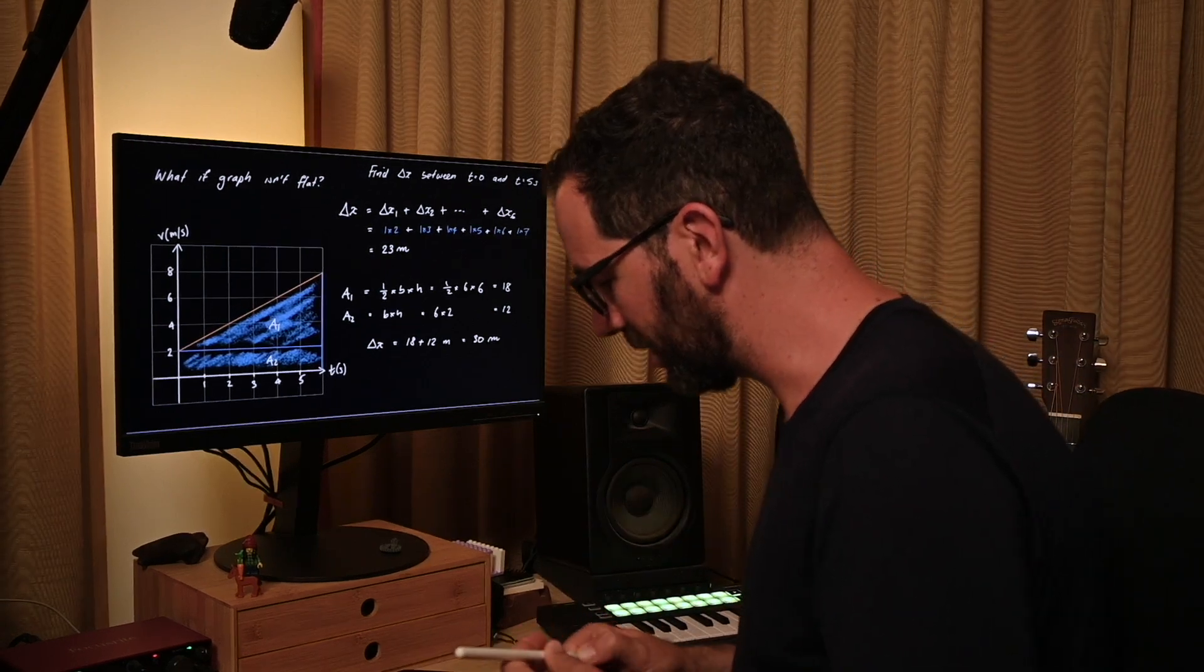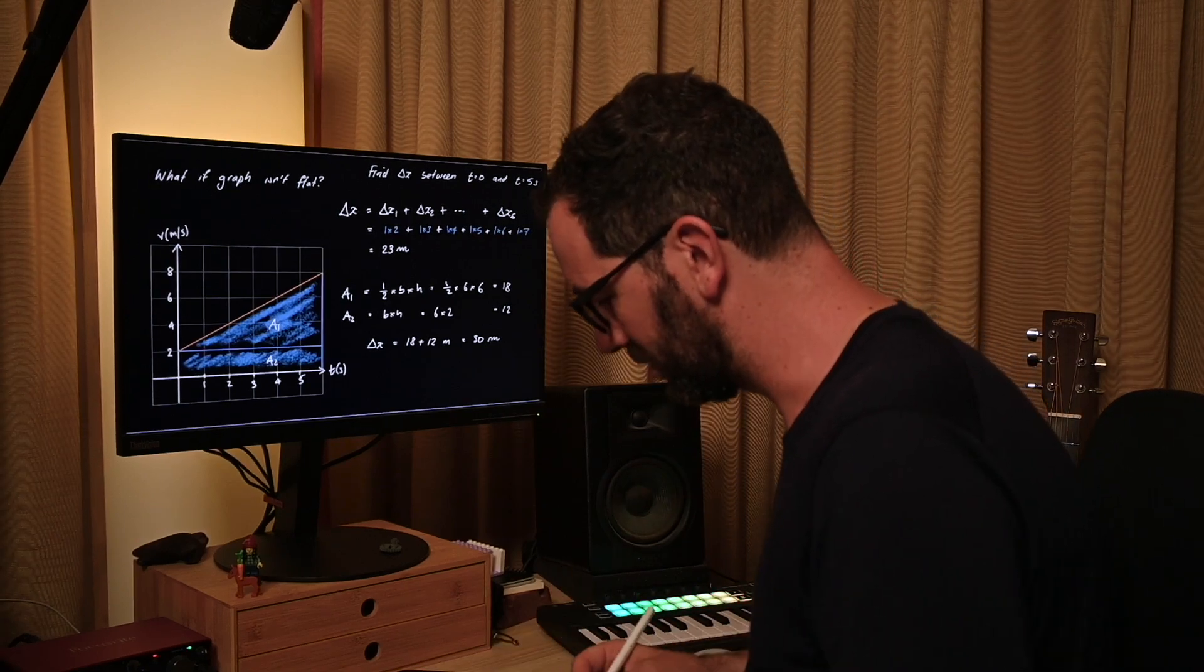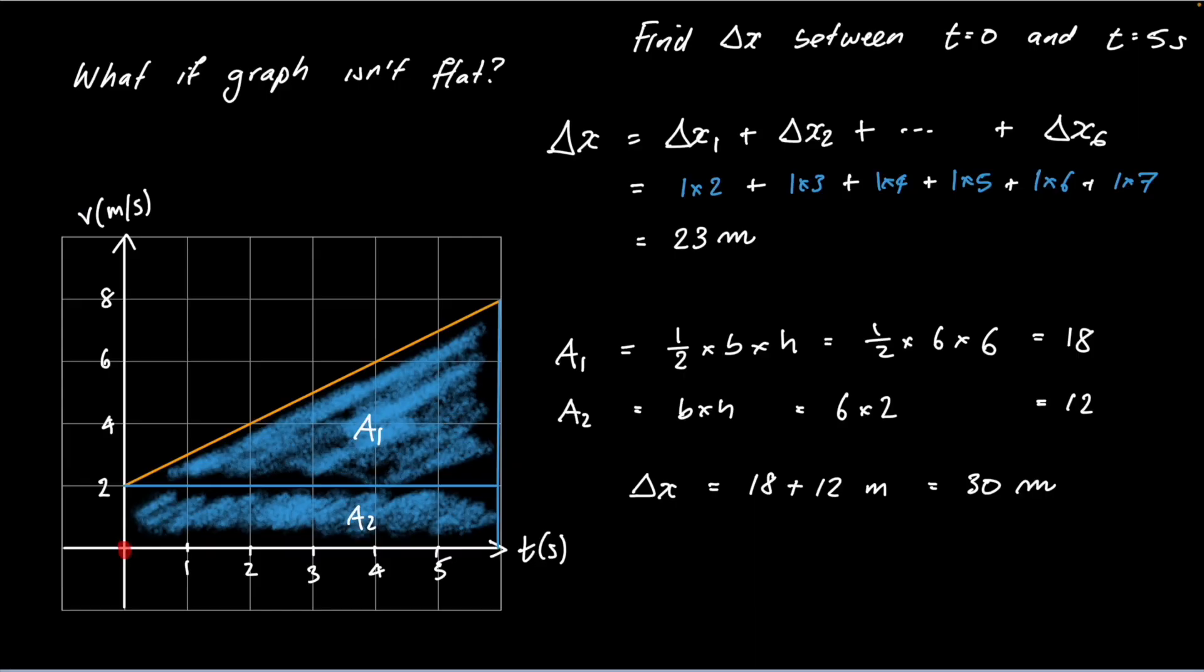We can pretty much always find displacements from velocity-time graphs just by working out the area between the two points in question. For this one it was between zero and five. I went all the way to six, so let's just change the question to make it fit our purposes. 23 in the first case and 30 in the second.